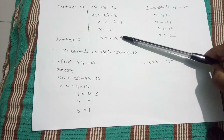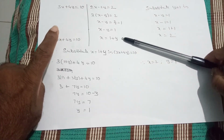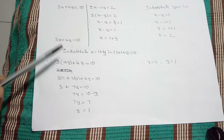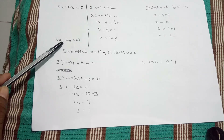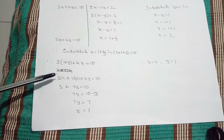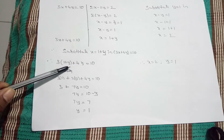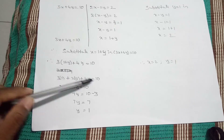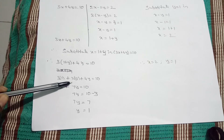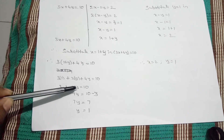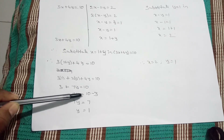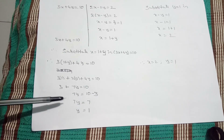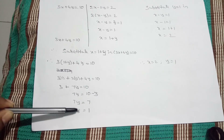Substitute this value of x into the first equation. In place of x we have 1 plus y, so 3 times (1 plus y) plus 4y equals 10. The 3 distributes: 3 times 1 is 3, plus 3y plus 4y equals 10. So 3 plus 7y equals 10, and 7y equals 10 minus 3, giving 7y equals 7, therefore y equals 1.